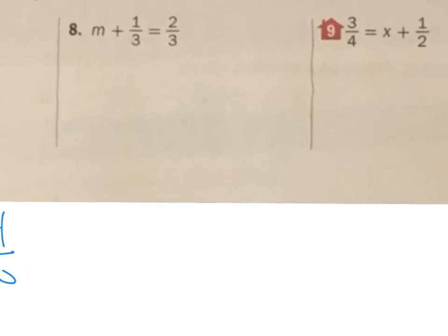So 8. We have M plus 1 third equals 2 thirds. I want to get M all by itself. The way I'm going to do that is to get rid of this 1 third.